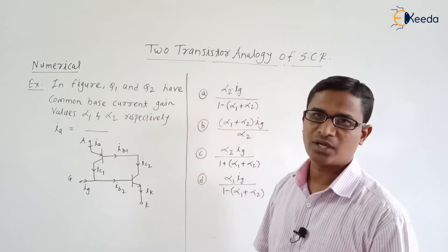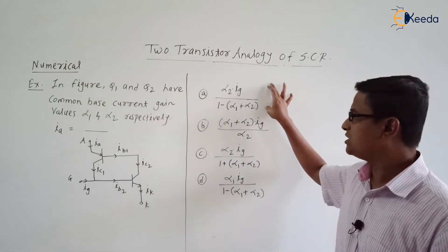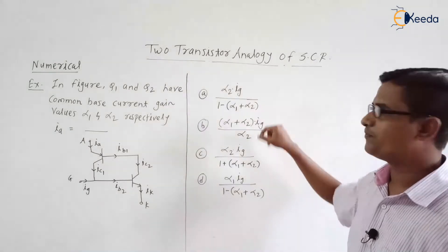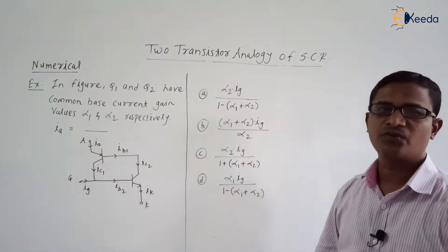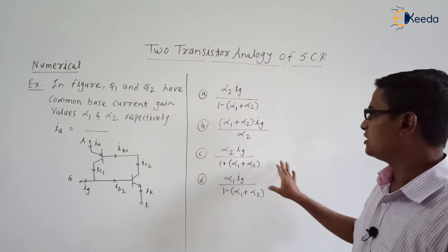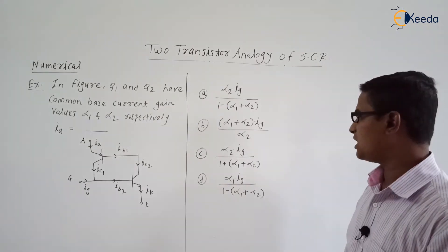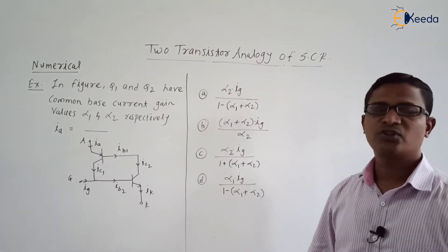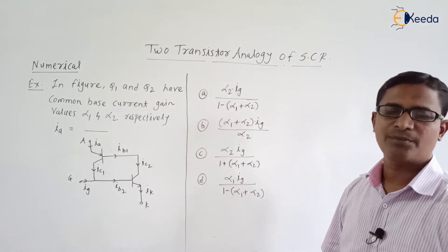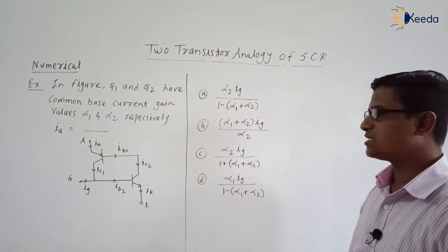They have given the four options. Here options are alpha 2 Ij upon 1 minus alpha 1 plus alpha 2. Second one is alpha 1 plus alpha 2 into Ij upon alpha 2. Third one is alpha 2 into Ij upon 1 plus alpha 1 plus alpha 2 and fourth one alpha 1 into Ij upon 1 minus in bracket alpha 1 plus alpha 2.